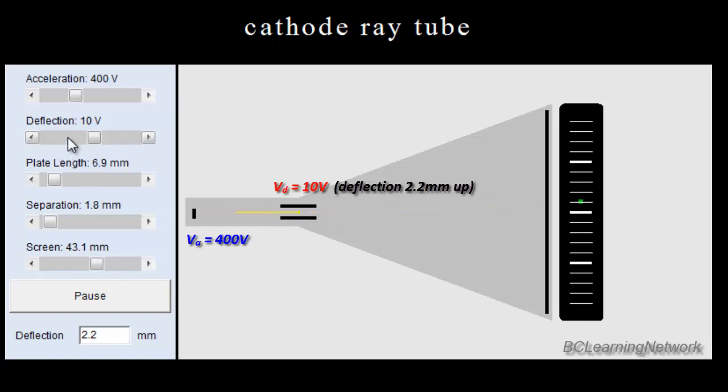In fact, if I make my voltage the reverse polarity, you see that deflection is equal and opposite, it's on the bottom. Now at the bottom of the simulation, it actually gives us our deflection, negative 2.2 millimeters.